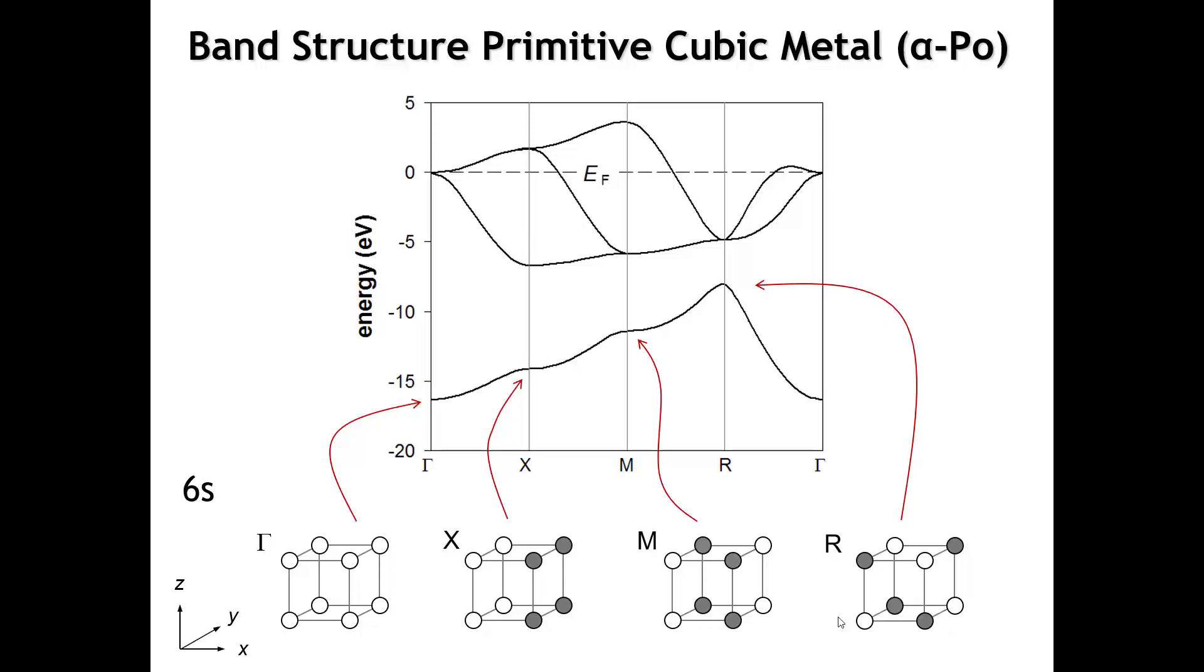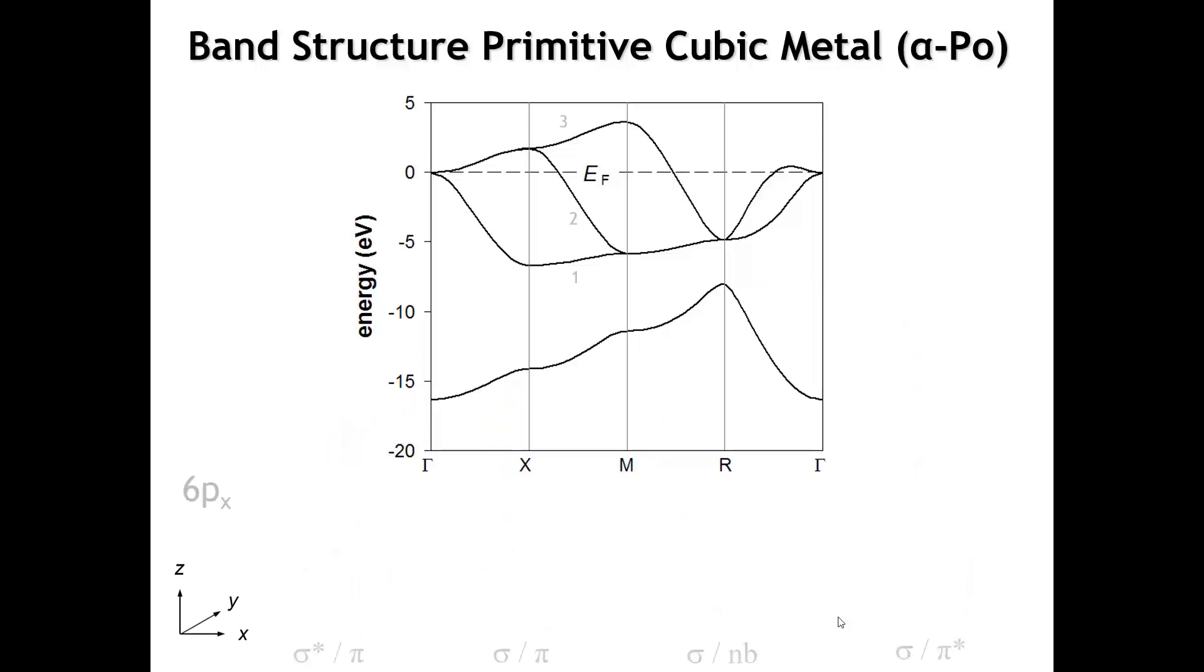Now let's consider the 6p orbitals, starting with the 6px. Let's look at the overlap at gamma. Just like we did with our fluorine atom chain, the sigma interaction between p orbitals is going to be anti-bonding. This is going to be at a relatively high energy. If you look at the gamma point, all three p orbitals are degenerate—they all have the same energy, which is this anti-bonding sigma interaction.